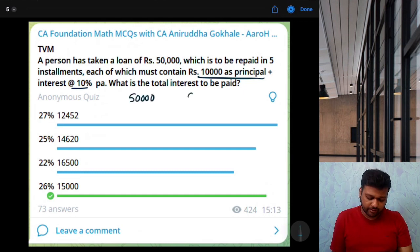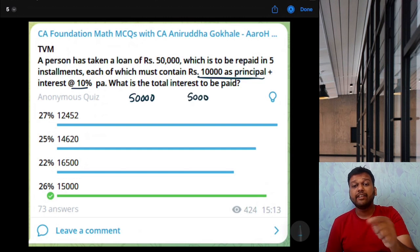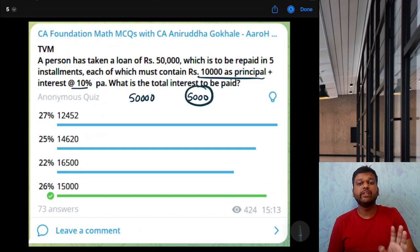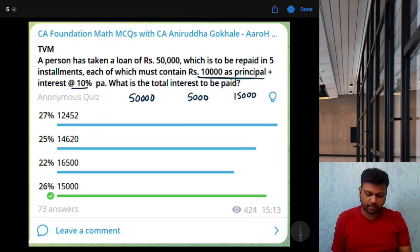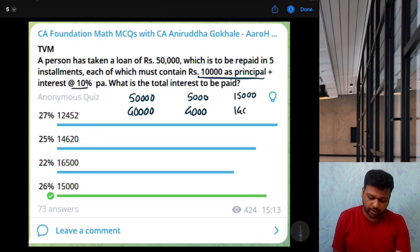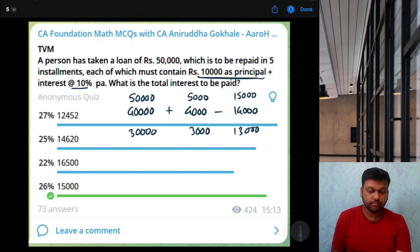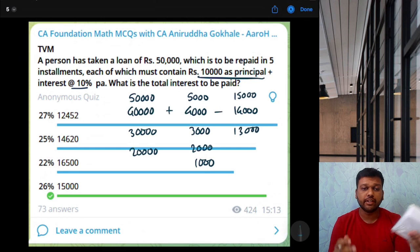For first year loan is 50,000. So, how much will be interest at 10%? 5,000. Now, at the year end, you will repay 10,000 plus this interest. So, you will repay 15,000 rupees. So, now what is the balance? 50,000 was opening balance plus 5,000 was interest minus 15,000 was repaid. So, 40,000 is the new balance. Again, 10% interest for second year. So, 4,000. Now, we will repay 10,000 plus that interest. That is 14,000. If you go by the same logic, you will know that interest is going to be 2,000 and 1,000. So, it is just total of all of that 1 plus 2 plus 3 plus 4 plus 5. That is 15,000 option D.